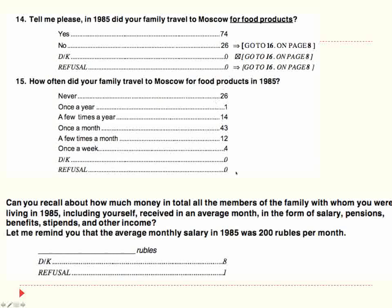I did a lot of in-depth interviews before designing the consumption survey, plus ethnographic observation. People were still making a lot of comparisons to the Soviet period, especially around acquiring food. Did your family travel to Moscow for food products? Kaluga was about a three-hour train ride from Moscow. The frequency distribution showed about a quarter of families didn't go, but three-quarters went more often or at least claimed they did. I also included a salary question because salaries were so fixed that everyone of working age can reportedly remember it — though I haven't actually validated this measure.